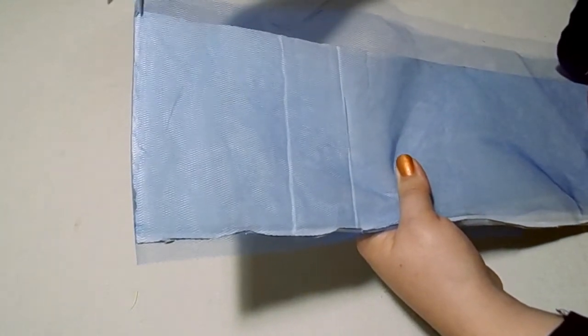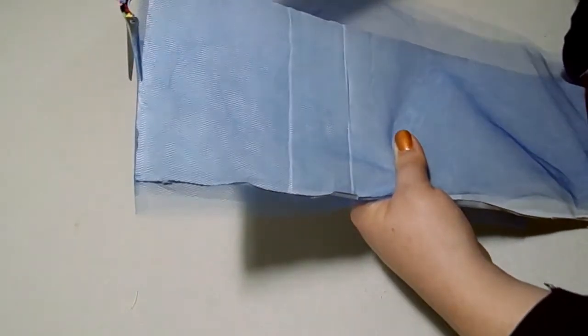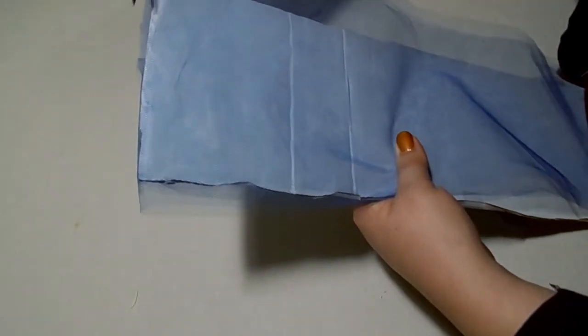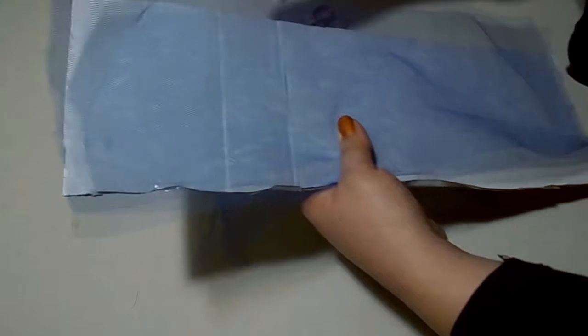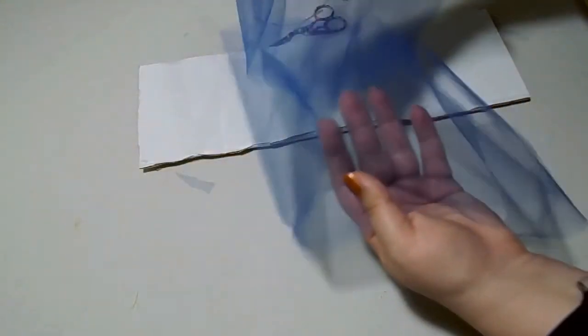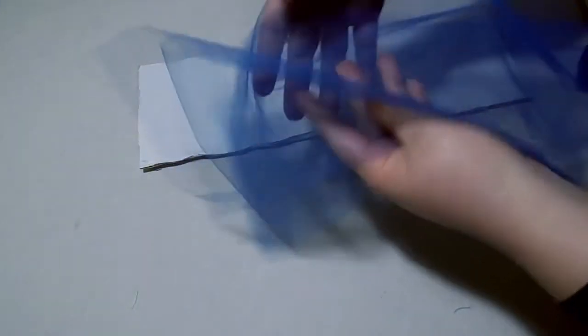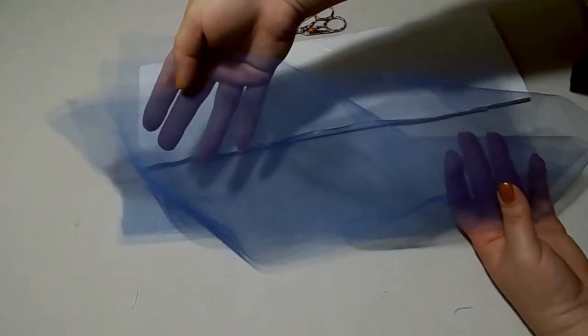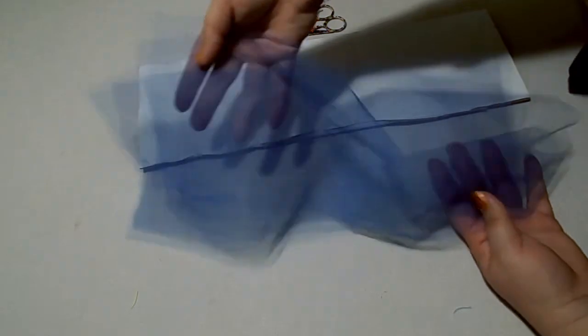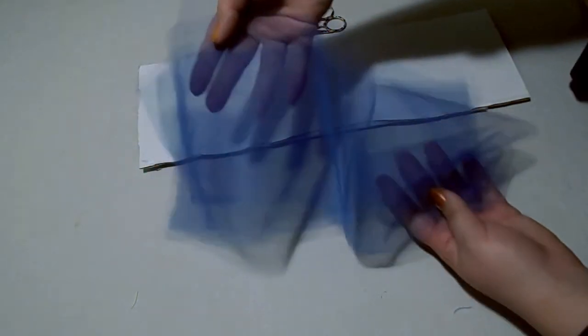So insert your scissors right up against the cardboard and trim right up against the top. And there you have it, this way you'll easily be able to cut 50 or 100 lengths of tulle in minutes rather than measuring out each length of tulle one by one.